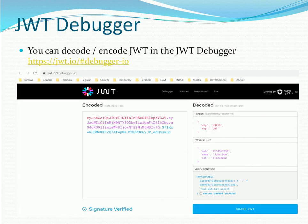JWT is one of the most popular authentication and authorization mechanisms used in the current market. We will go to the JWT website to encode and decode tokens. You will see on the screen — you provide an encoded token and you can see the decoded token on the right side. This is the alternative way to implement it, using the secret key.